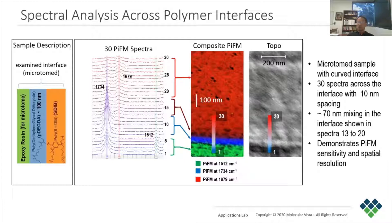There is a gradual transition between PDEGDA and SDIB layers, colored blue and red respectively, signifying mixing between these two components. To understand the local chemical state, we have taken 30 spectra across the interfaces with 10 nanometers spacing between each spectrum. Looking at the strong carbonyl peak at 1734 wavenumber, we see a sudden increase between spectrum number 5 and 6, consistent with the sharp interface between the epoxy and PDEGDA layers observed in the chemical map image.